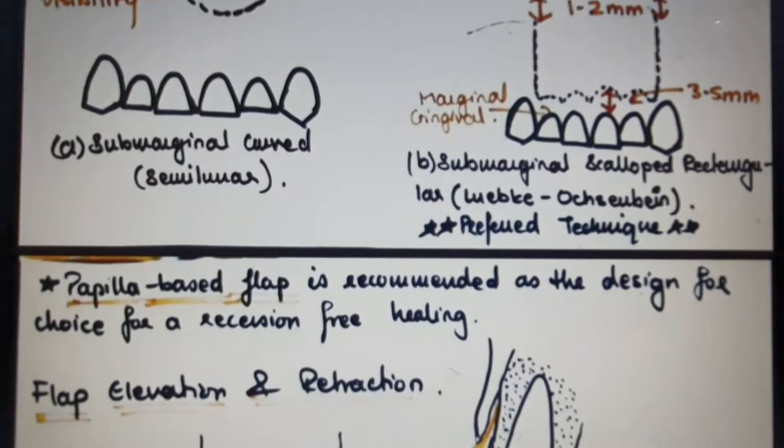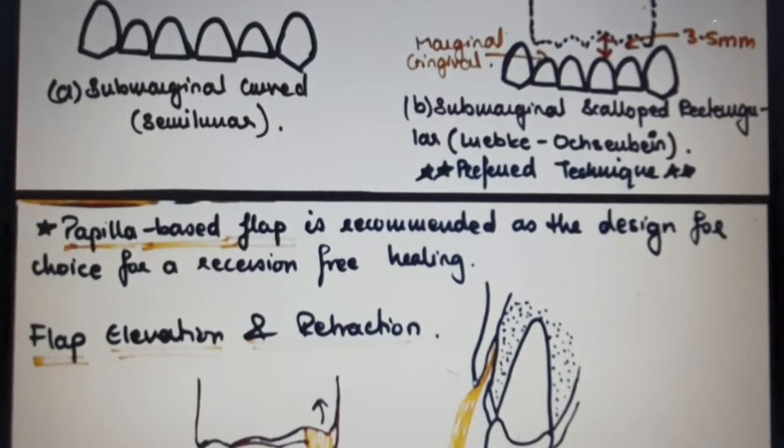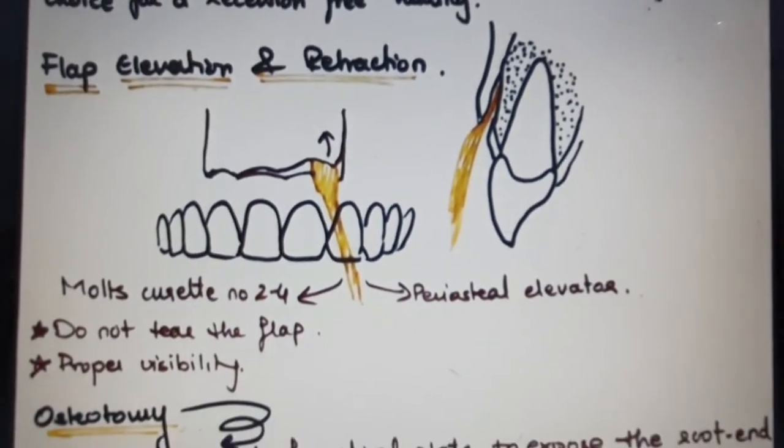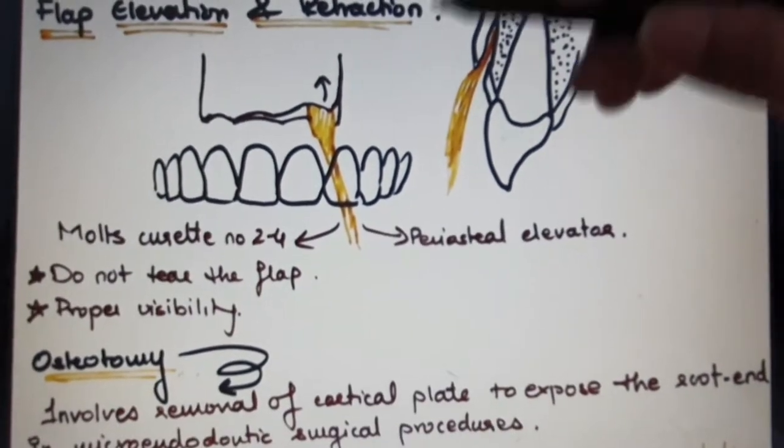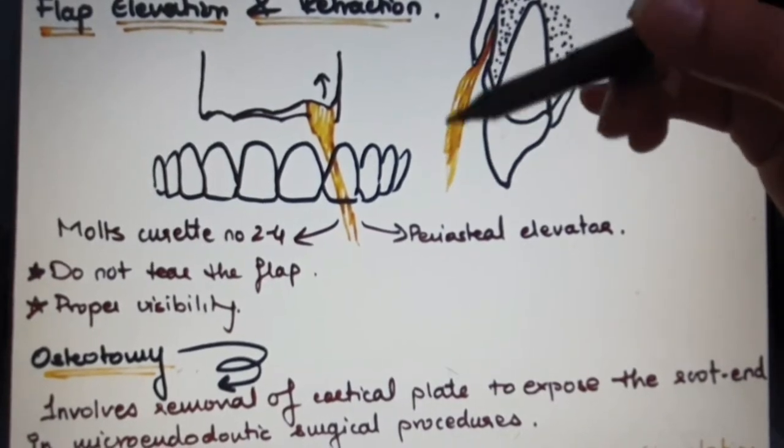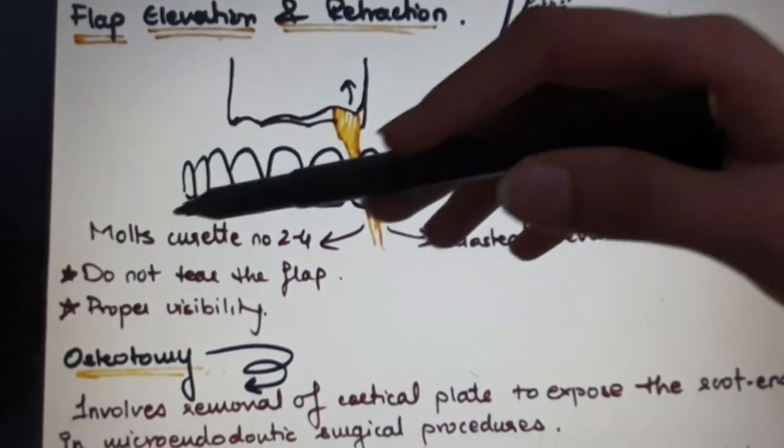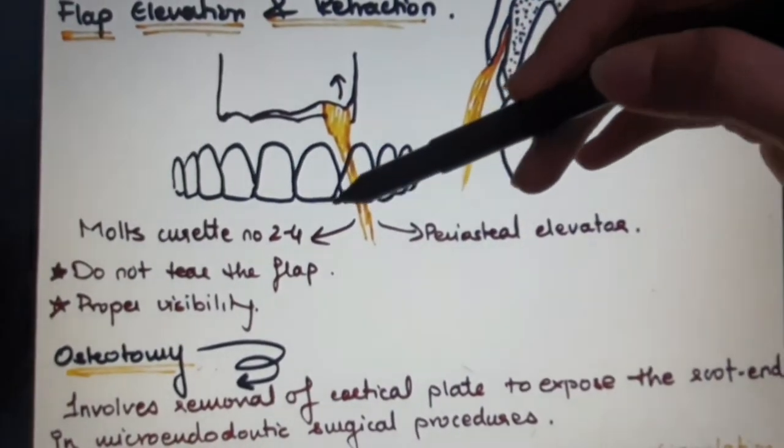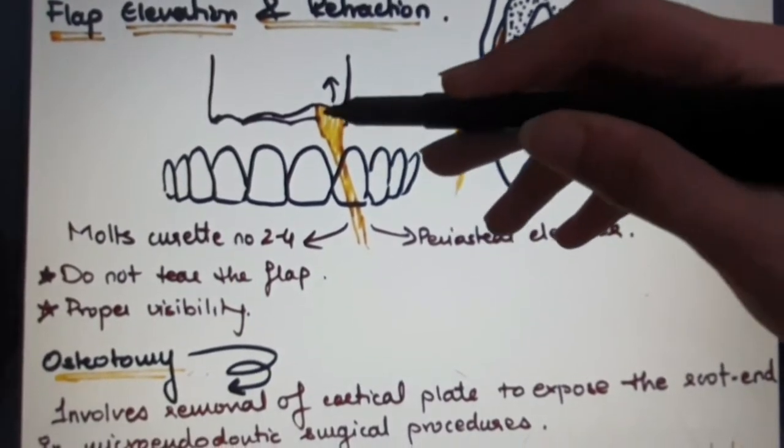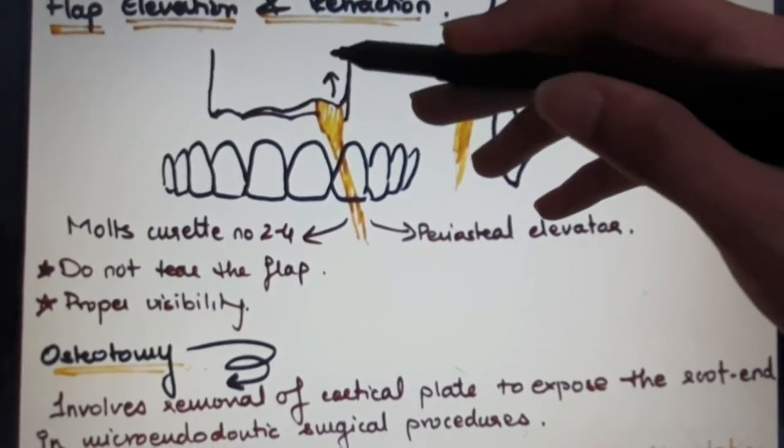We also have papilla-based flaps recommended for recession-free healing. In flap elevation and retraction, a full thickness or limited mucoperiosteal flap is reflected with Molt's curette number 2 or 4, or with a periosteal elevator. Make sure not to tear the flap while reflecting and ensure proper visibility for the surgical area.